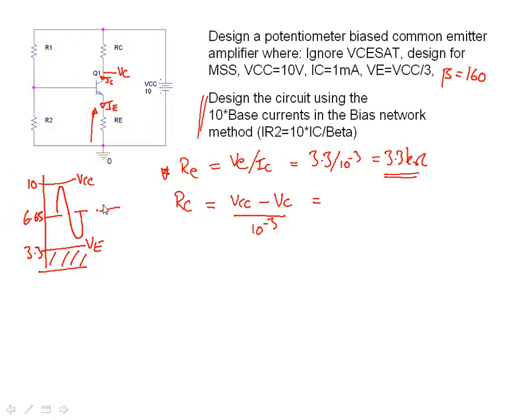Again, let's put in the numbers: 10 minus 6.65, all divided by 10 to the minus 3, gives us our value of collector resistance, which in this case is 3.35K. As we can see, that's exactly the same as all the traditional methods.